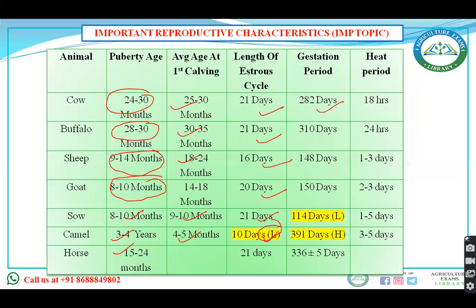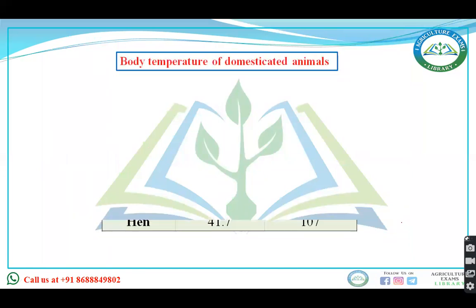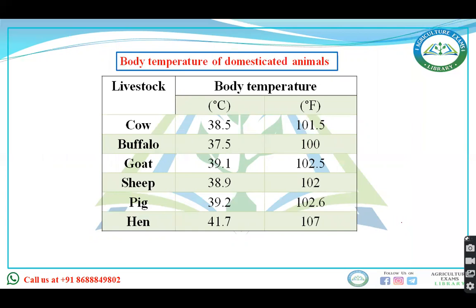Gestation period — cow 282 days, buffalo 310 days, sheep 148 days (shortest), camel 391 days (longest). Heat period — cow 18 hours, buffalo 24 hours, sheep 1–3 days, goat 2–3 days, sow 1–5 days, camel 3–5 days. Body temperature of domesticated animals in Fahrenheit — cow 101.5°F, buffalo 100°F, goat 102.5°F, sheep 102°F, pig 102.6°F, hen 107°F. As body size decreases, body temperature increases.